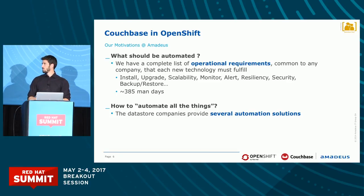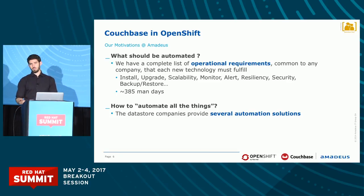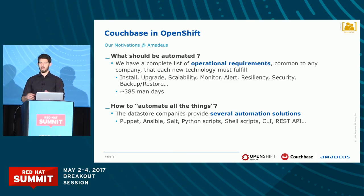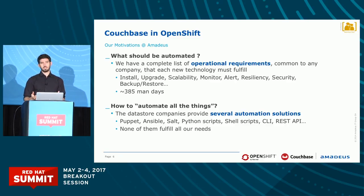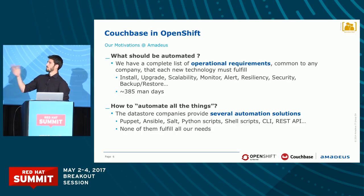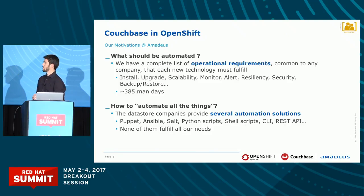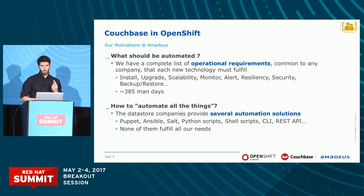Luckily, all the data store companies are providing several automation solutions. They all have Puppet modules, Ansible playbooks, Salt, scripts, REST APIs, command line interfaces — you name it. But the thing is there is not one single solution that fulfills all our requirements. Maybe you can deploy your cluster with Puppet, but then you will need the REST API to retrieve the metrics, and the backup/restore you will do with a command line interface. There is not one single solution that provides everything we need for all the data stores.